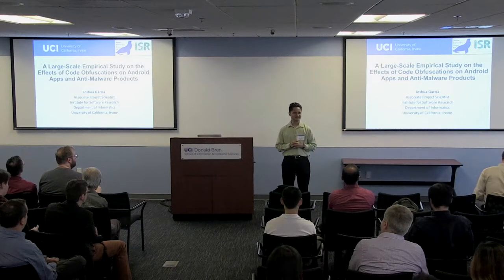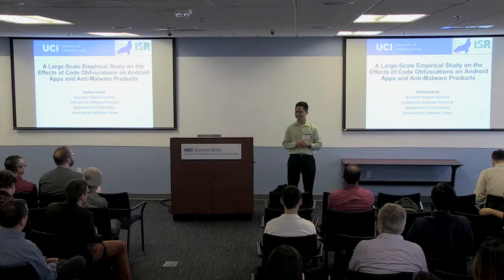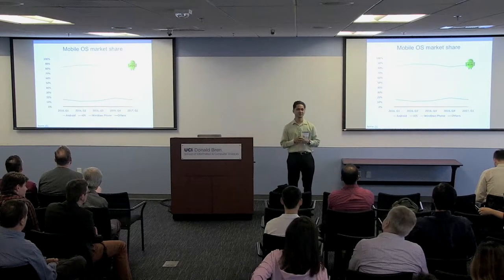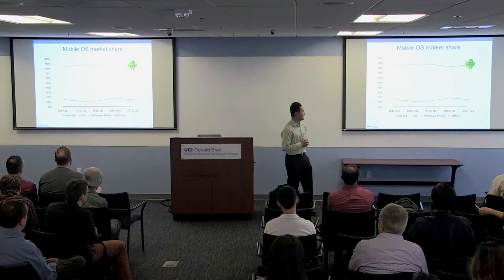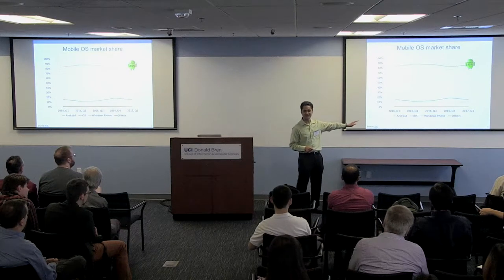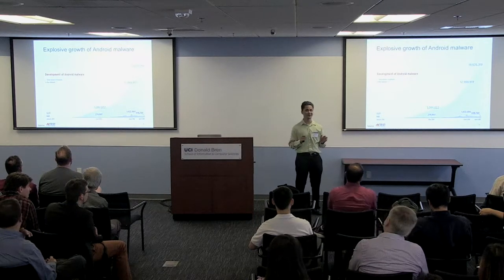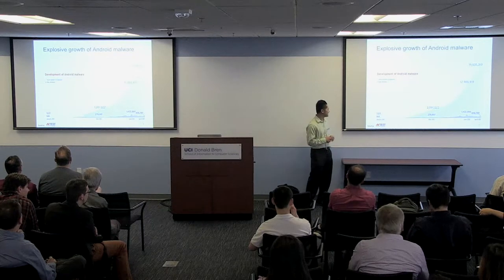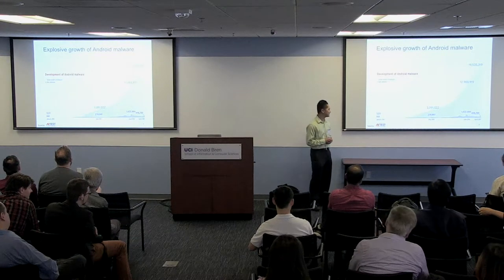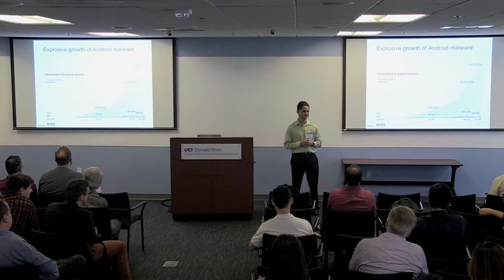I'm going to talk about just one study in the results we've been conducting here at the Software Engineering and Analysis Lab at UCI. To begin this talk, let's look at the mobile operating system market share. Android has an overwhelming majority — 85% — which is way more than all other mobile OSes combined. And not only does Android have such a large market share, it also has a lot of malware. You're seeing a timeline from January 2011 through April 2017 showing explosive growth of malware. From May 2014 through April 2017 alone, that growth has been more than six times in size.